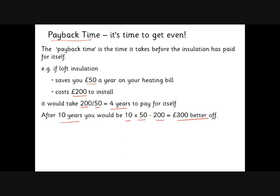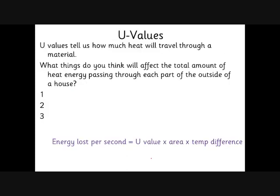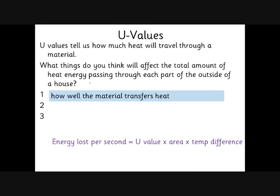The third part of this lesson is U-values — certainly the trickiest part. U-values relate to how much heat travels through different materials. When thinking about the total amount of energy that passes through each part of the outside of a house, there are three things to consider. The most obvious is how well the material transfers heat — a single-glazed window, for example, is very good at passing heat through to the outside, so it's got a high U-value, which is a bad thing.